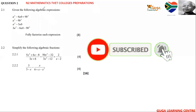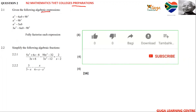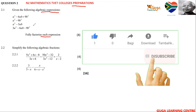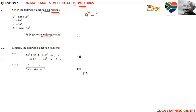Welcome back to Mathematics Activate Colleges exam preparations. Question 2.1 gives us the following algebraic expressions, and we need to factorize each of the expressions. The first expression is a squared minus 6ab plus 9b squared. Here, we are given a trinomial.